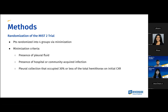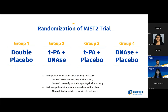Patients were randomized into four groups via minimization. The minimization criteria was the presence of pleural fluid, presence of hospital- or community-acquired infection, as well as pleural collection that occupied 30% or less of the total hemithorax on initial chest X-ray. Group one was the double placebo. Group two was the combined TPA and DNase therapy. Group three was TPA alone. Group four was DNase alone. The intrapleural medication was given twice daily for the first three days. The dose of DNase was 5 mg, whereas the dose of TPA was 10 mg. Following administration, the drain was clamped for one hour, allowing the study drugs to remain in the pleural space and work to their best ability.